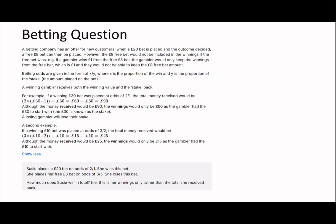If a winning £30 bet was placed at odds of 2/1, the total money received is 2/1, so 2 times 30 divided by 1, plus your original 30, which is 60 plus 30 which equals £90. Although the money received would be £90, the winnings would only be £60 as the gambler had £30 to start with. The £30 is known as the stake. A losing gambler will lose their stake.